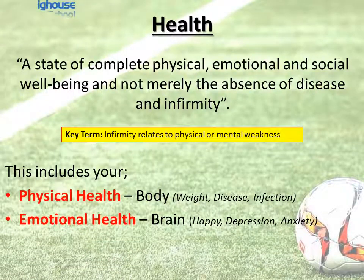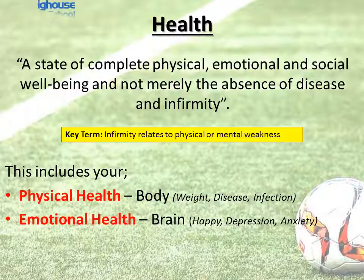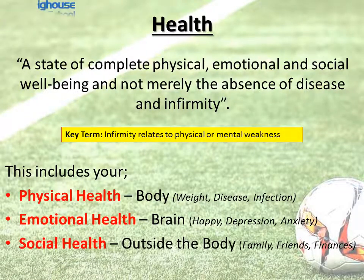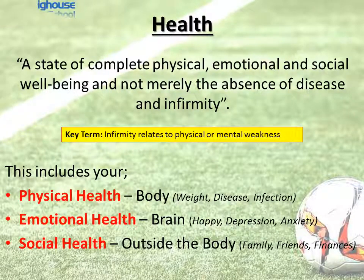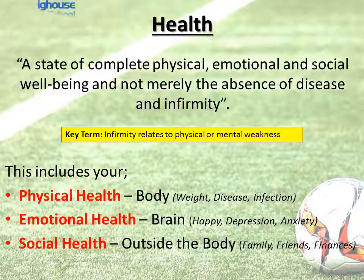The next thing looks at emotional health, which primarily refers to the brain — the emotions that the person generally experiences on a day-to-day basis. Are they happy? Have they got depression? Have they got anxiety? And lastly we look at social health — anything outside of the body. So we look at the individual's family, friendship group, finances, income, job security, education. So health is not basically just the physical aspects but it's also the emotional and the social.